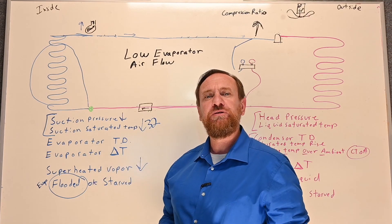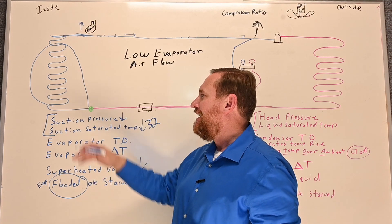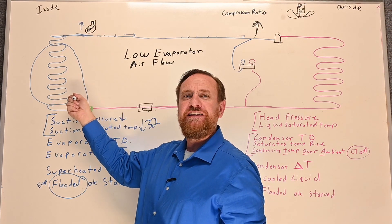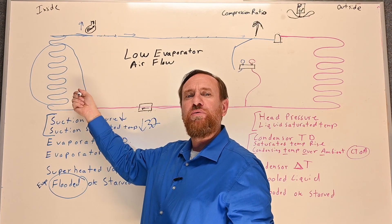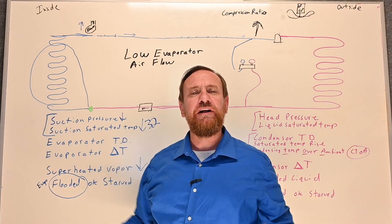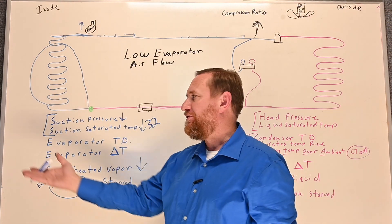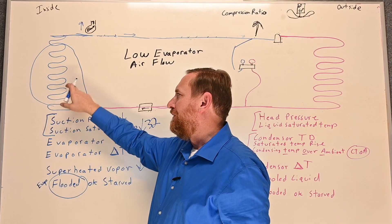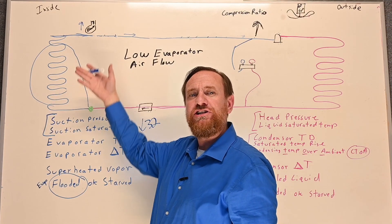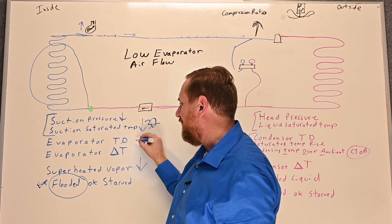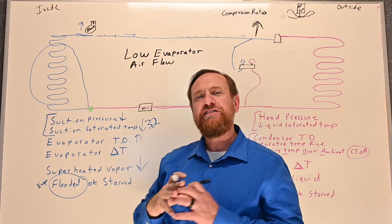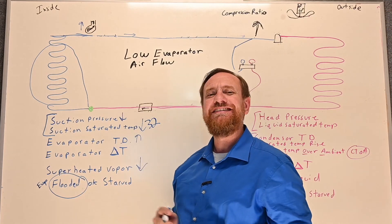Let's look at some other scenarios. Now that my suction temperature is dropping, the temperature difference — the TD — between the boiling refrigerant and the air temperature is going to get farther and farther apart. The air temperature is going to be the same coming into it, but the suction saturated temperature, the boiling temperature, as it drops will be much farther away. So our TD, our temperature difference, gets to be farther away — we'll see a higher TD.